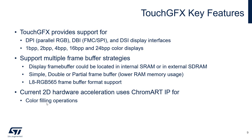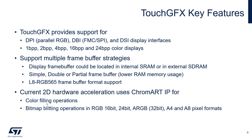The current 2D acceleration uses the ChromeArt IP, which is included in several STM32 MCUs, for color-filling operations and bitmap blending operations in RGB 16-bit, 24-bit, and even 32-bit. It also supports the A4 and 8-bit pixel formats — lookup table formats used for text. Both filling and blending are done with or without alpha blending.